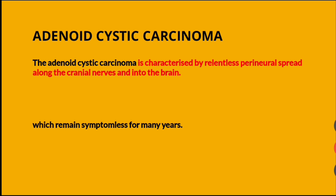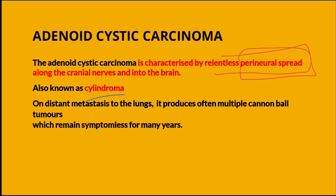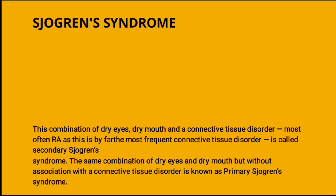Adenoid cystic carcinoma is characterized by relentless perineural spread — many times the question has been asked which carcinoma shows this characteristic feature. The other name of adenoid cystic carcinoma is cylindroma. During distant metastasis into the lung, it forms multiple cannonball tumors.